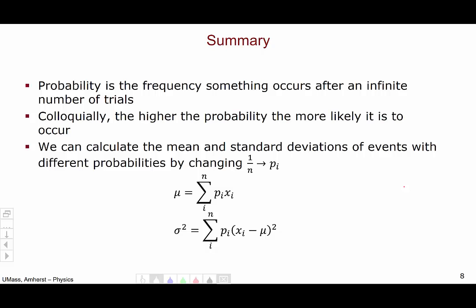In summary, the probability is the frequency something occurs after an infinite number of trials. And colloquially, we say that the higher the probability, the more likely a given event is to occur. With this idea of probability, we can adjust our definitions of mean and standard deviation by swapping out the 1 over n out front and instead multiplying inside the sum by the probability of each occurrence. This concludes this video.